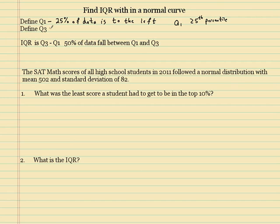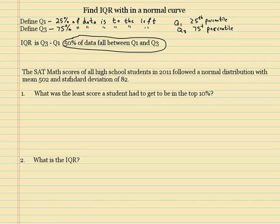And what about Q3? Q3 is the same thing, but it's 75% of data is to the left. So Q3 is just another way of saying the 75th percentile. So the IQR is Q3 minus Q1, and this is where 50% of the data fall between that. So let's do these couple examples.